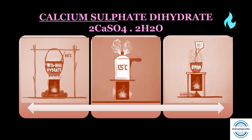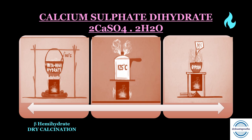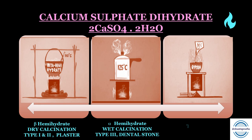All gypsum products result from heating gypsum and driving off part of the water of crystallization — a process called calcination. If calcination is done in an open kettle at 110–120°C, it forms beta calcium sulfate hemihydrate (model plaster); this is called dry calcination. If heating is done under steam and pressure at 125°C, it forms alpha calcium sulfate hemihydrate (dental stone). If heating is done with 30% calcium chloride at 100°C, it forms alpha calcium sulfate hemihydrate — the type 4 and type 5 highest-strength stones. All three are calcium sulfate hemihydrate.